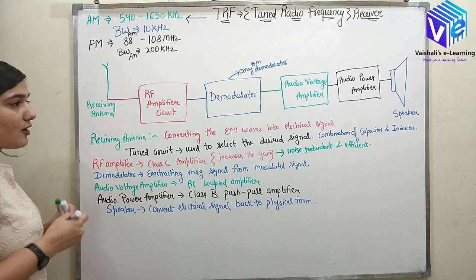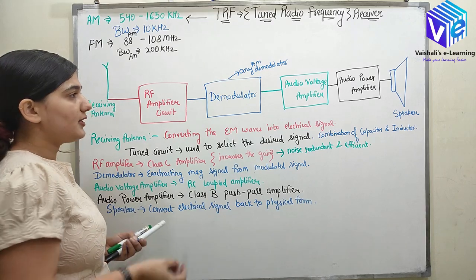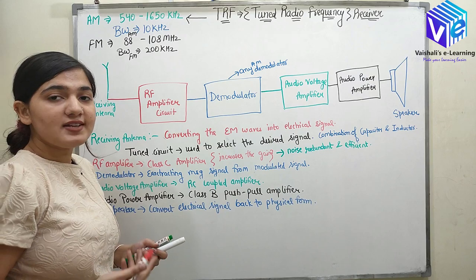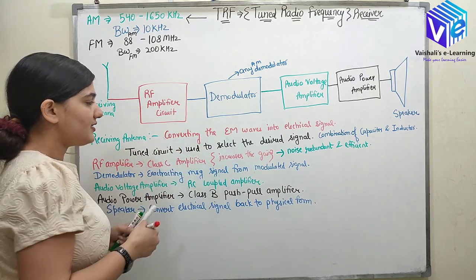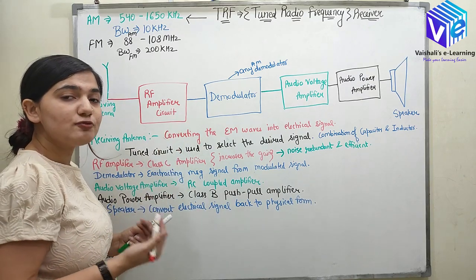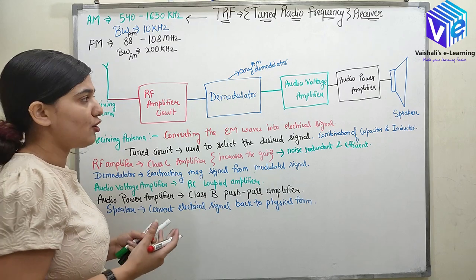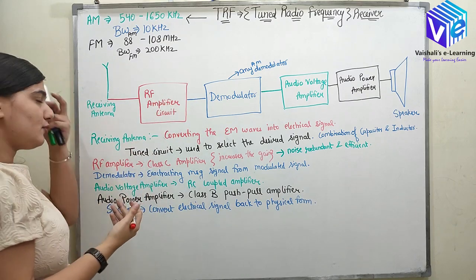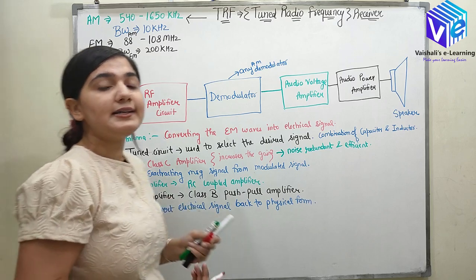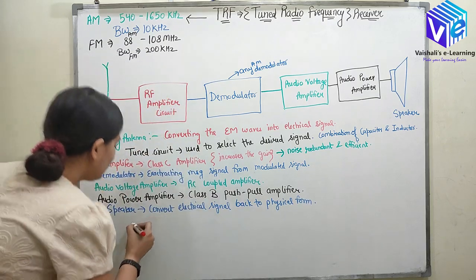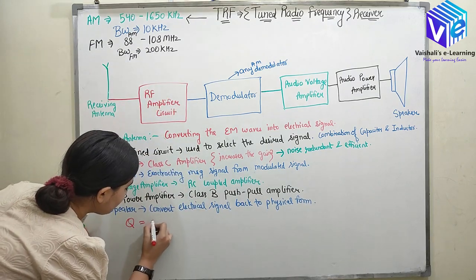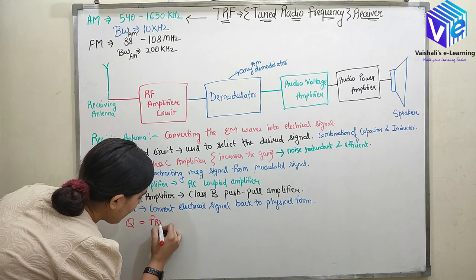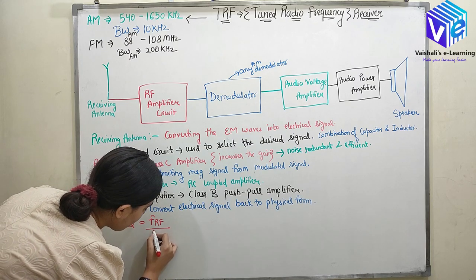Now let me talk about the problems encountered in this type of receiver. Because TRF was the first receiver, and then we had super heterodyne, and then phase lock loop — this progression happened because TRF had some problems. The main problem was in the quality factor. I introduced the quality factor in my previous video — it is equal to FRF divided by bandwidth.